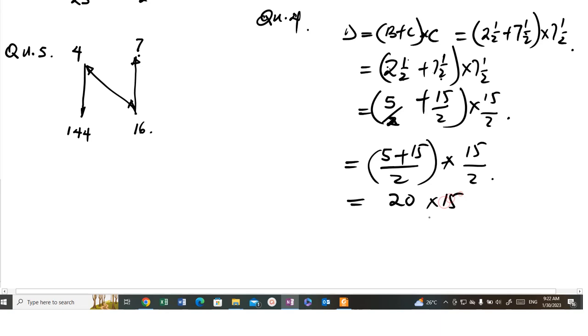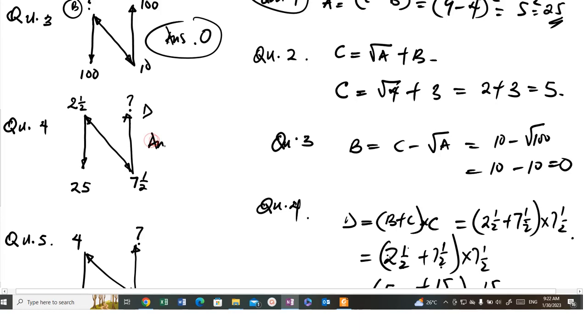So this is equal to 20 times 15, followed by 2 times 2 is 4, 4 divided by 1. So 5 times 15 will give you 75. So we are going to ask them for 75.